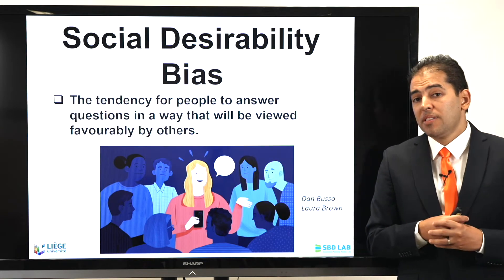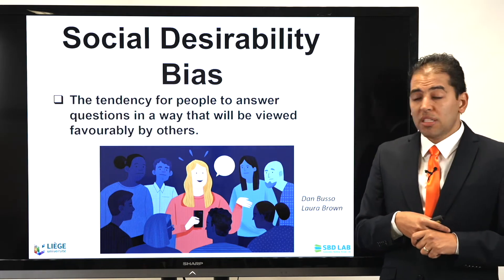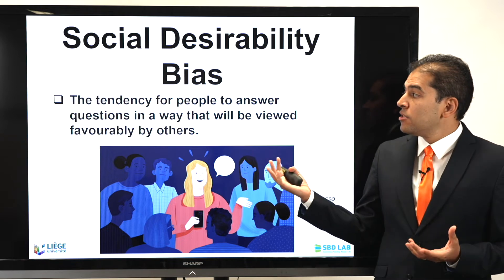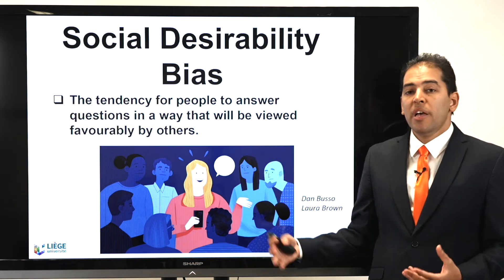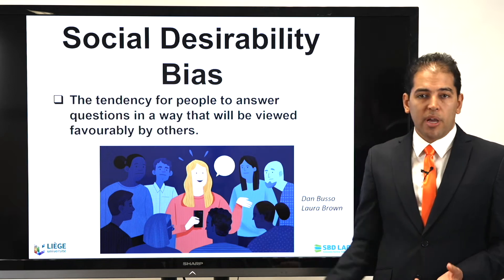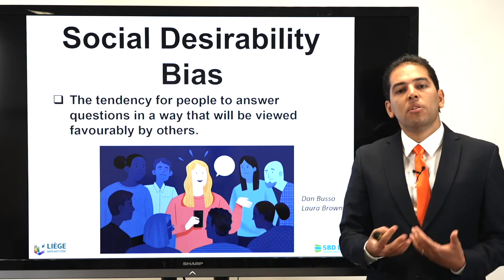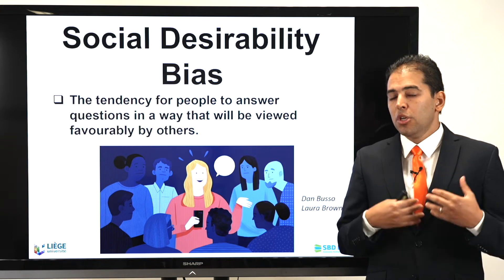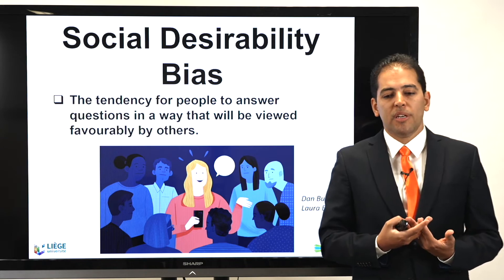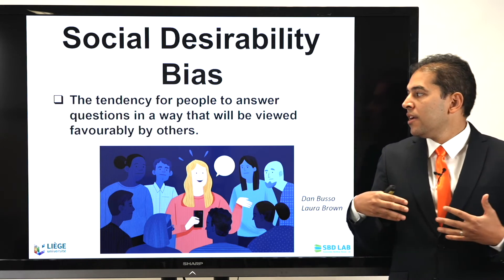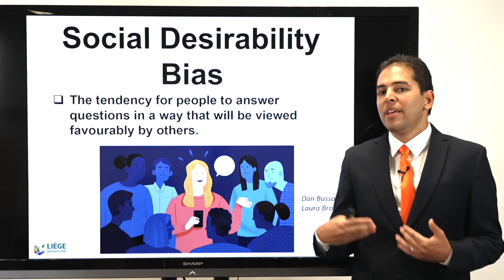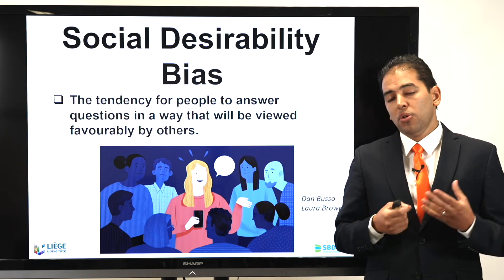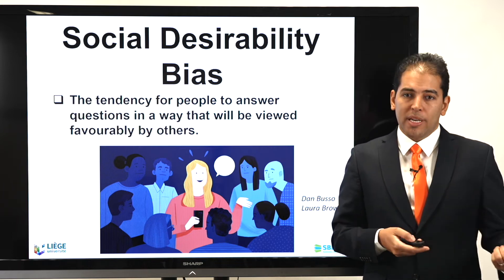The fourth bias very common in qualitative research is the social desirability bias — the tendency for people to answer questions in a way that will be viewed favorably by others. People are always looking to be recognized by others, so they will not express themselves honestly and the quality of feedback will be very low. They will just look for the favorable answer, while in reality you will not get the truth behind their answer. It's very important to be aware about those four biases.